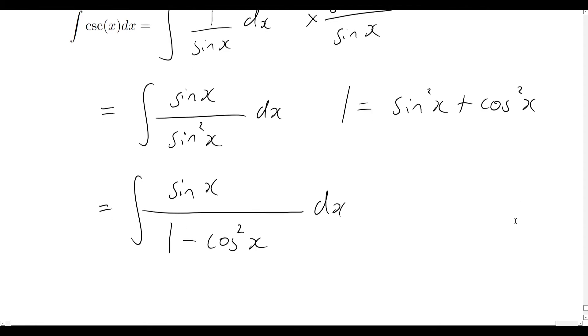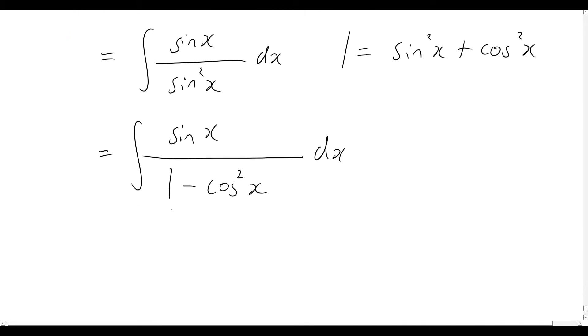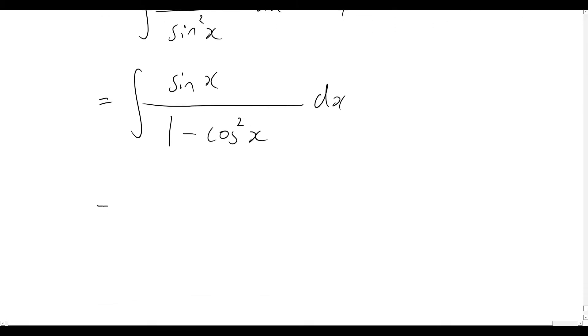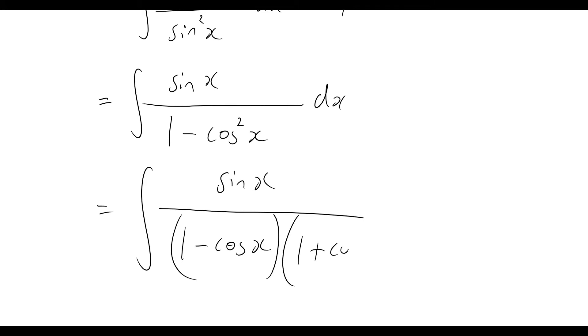So we'll have this all be equal to the integral of sine x over 1 minus cos squared x dx. So rather interesting already how we've managed to transform it from simply 1 over sine x to now sine x over 1 minus cos squared x. So 1 minus cos squared x. This looks a little bit weird, but hopefully you can recognize that this is simply going to be the difference of two squares. So what that means we can do now is we can rewrite this out with a new denominator. So it's still going to be sine x, but now it's going to be over 1 minus cos x times by 1 plus cos x.